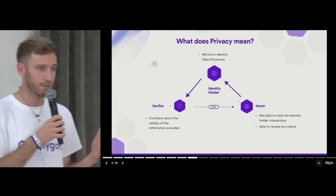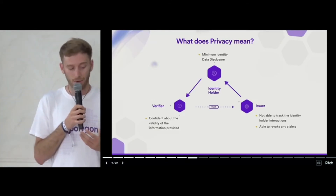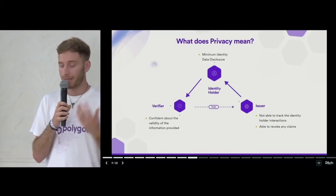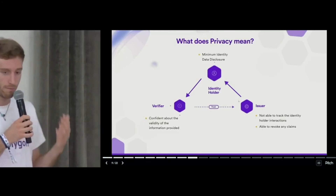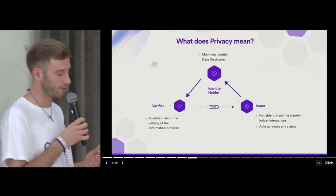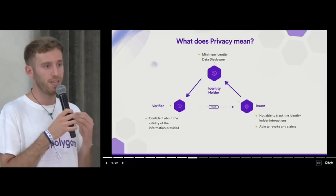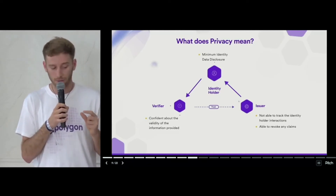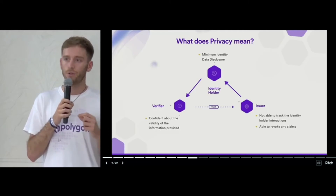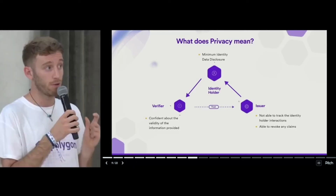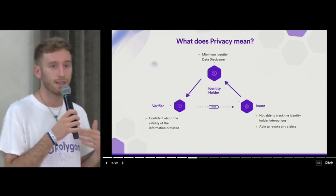So how can this structure be improved by adding privacy? We can add privacy by making the issuer unable to track your movement or your interactions. We want to make the identity holder able to share the minimum possible amount of data to a verifier. And we want the verifier to be able, starting from this small amount of data, to be confident about the validity of the information that gets shared.